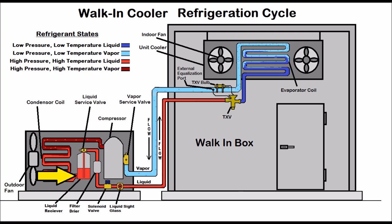When you start a walk-in box up for the first time, that liquid receiver should be drained just about all the way down to the bottom. You should have a solid column of liquid heading through that liquid sight glass — that verifies you still have enough sub-cooled liquid heading to the TXV. But you don't want to add extra refrigerant that will be stored in the liquid receiver.